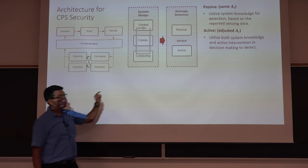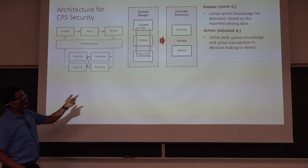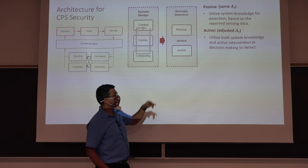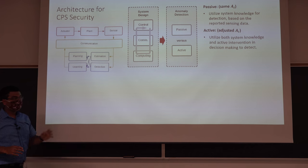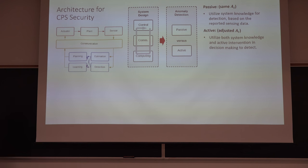Anomaly detection can be passive or active. In passive anomaly detection, you don't change actions at all — you look at incoming data and try to infer if the system is under attack, not under attack, faulty, or fault-free.